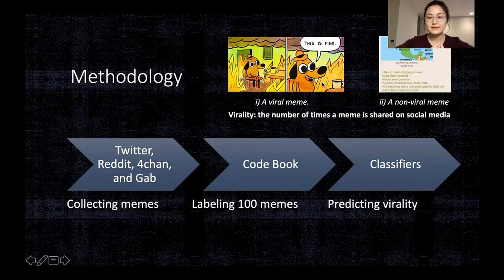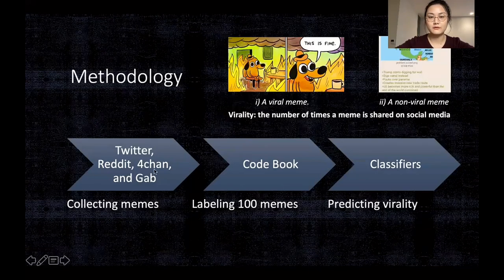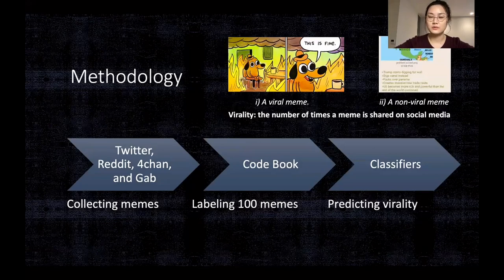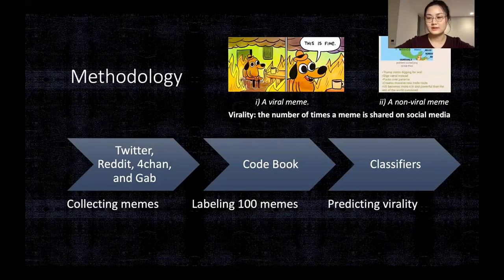To investigate our three research hypotheses, we follow a mixed method approach. We start by selecting a set of viral and non-viral image memes posted on the political incorrect board of 4chan. We then have six human annotators — also our co-authors — label 100 images according to the codebook: 50 viral and 50 non-viral. Finally, we train a classifier to distinguish between viral and non-viral images on the labeled dataset.